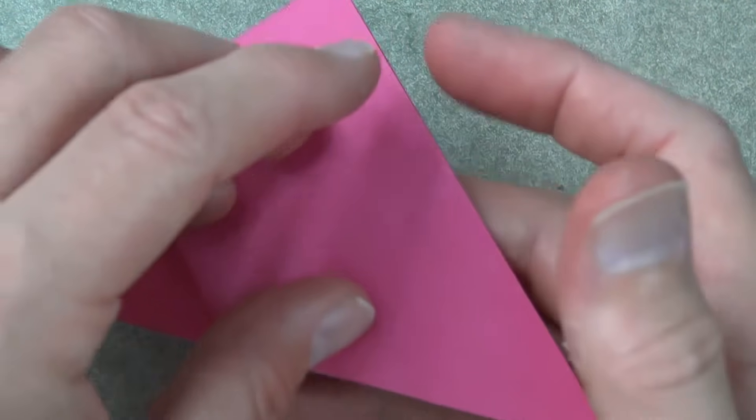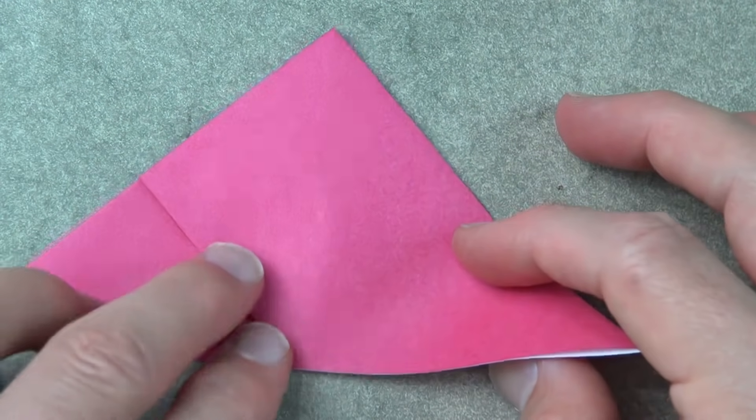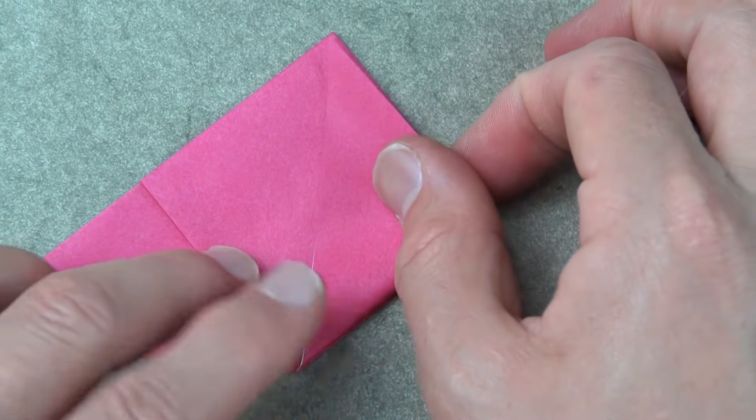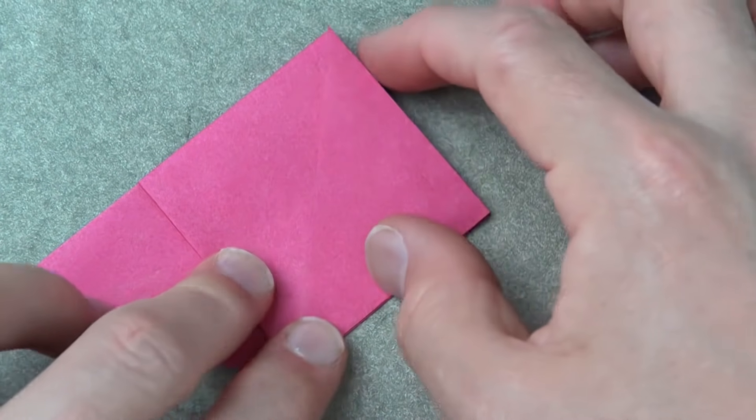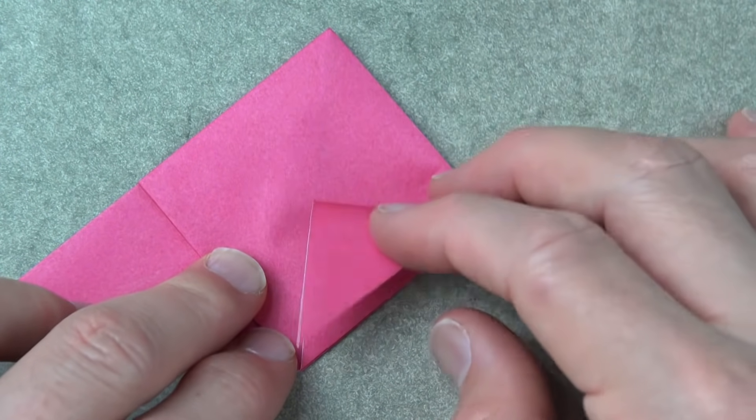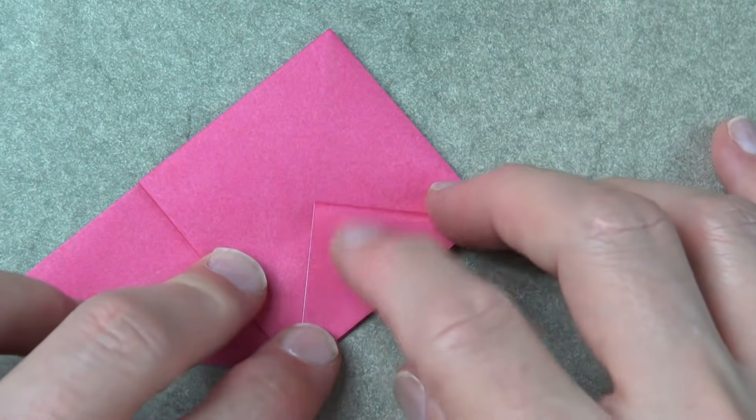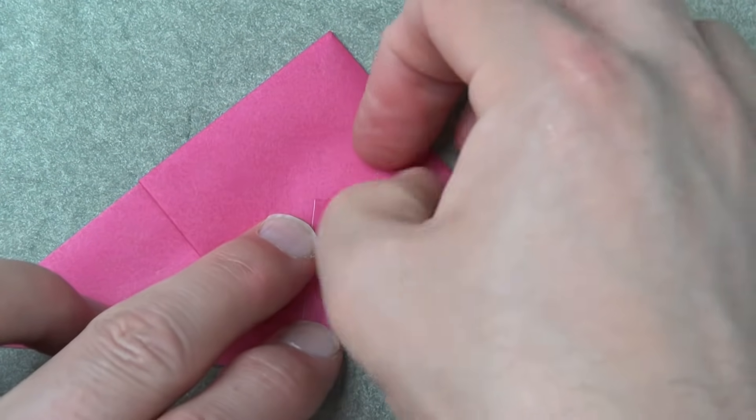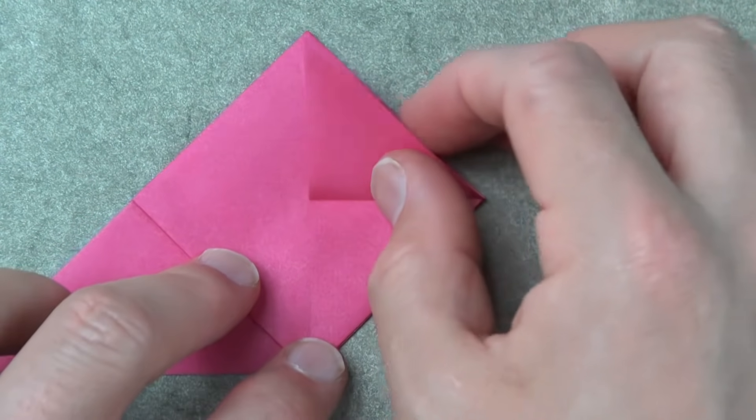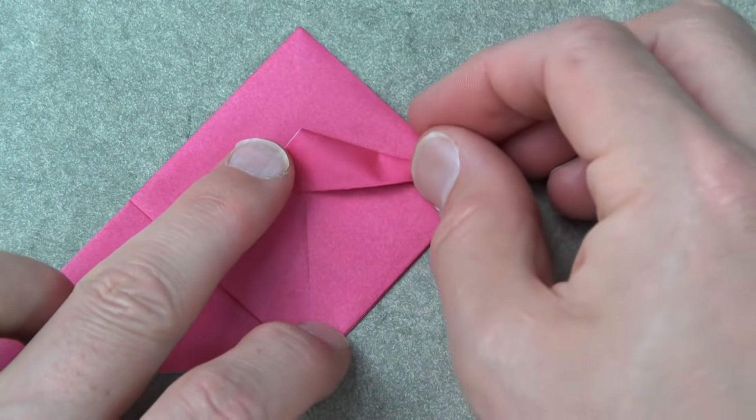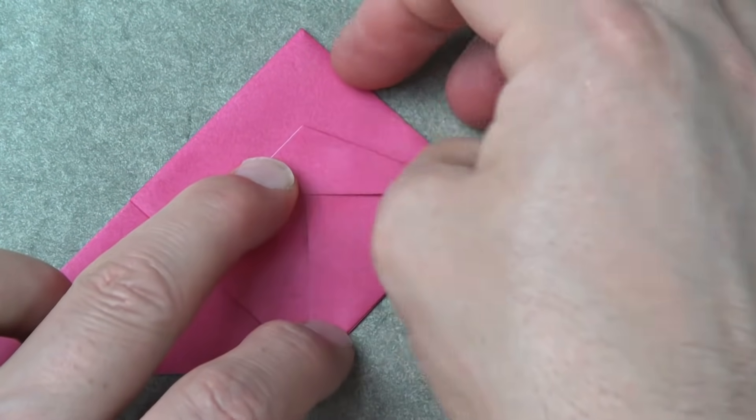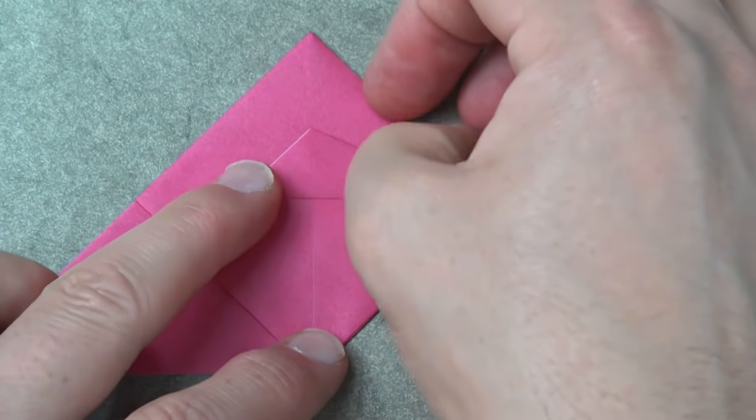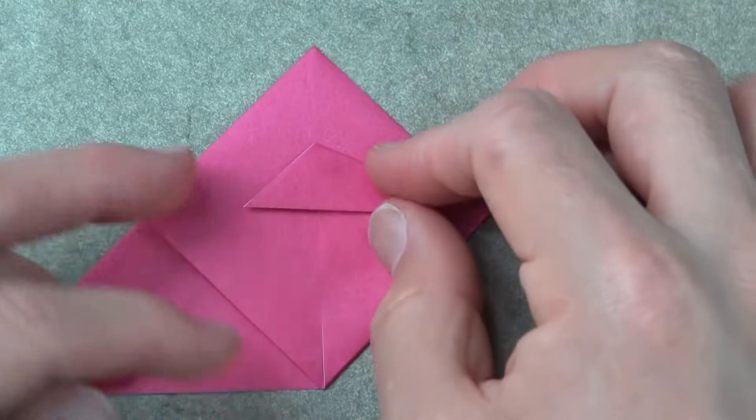Turn over and do the same thing. So fold this flap up and fold it down. Unfold, fold to the crease. Like that.